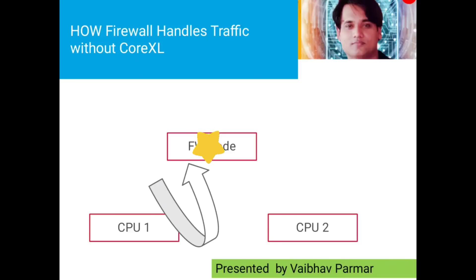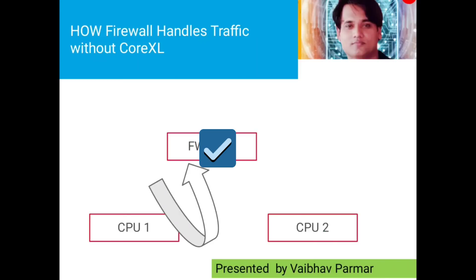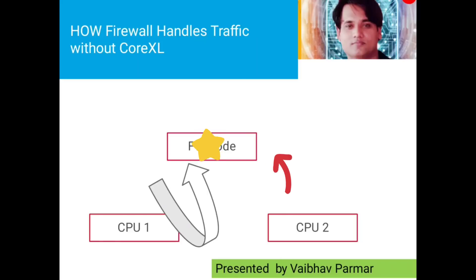At the same time, if a second packet arrives, it goes to CPU2. CPU2 sends an interrupt to the firewall code so the firewall code acknowledges that packet 2 has been received by CPU2 and needs to be processed. However, the firewall code will first finish processing packet 1 and then move to packet 2. So there is some delay — very small, but it exists — which causes some performance degradation when Core XL is not enabled.